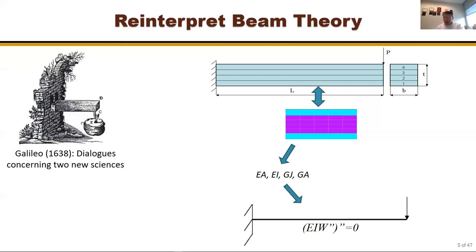We then reduce to a 1D problem. For example, bending is a fourth-order ordinary differential equation if there's no distributed force. After solving, we use the formula σ = My/I to find maximum stress, then apply our failure criterion and maximum allowables to make sure we design the structure correctly.